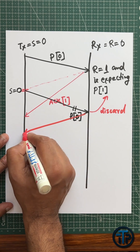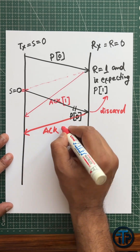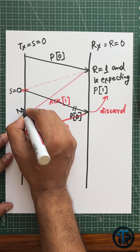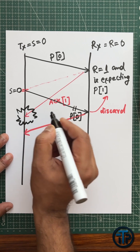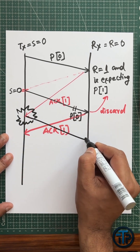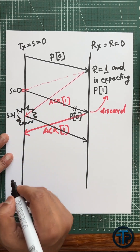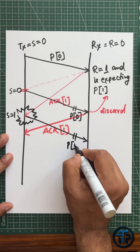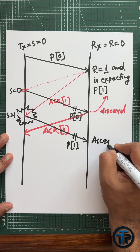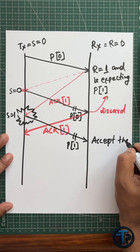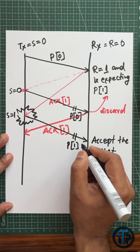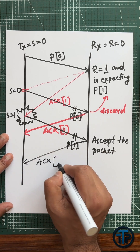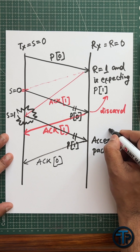Now for this case, the transmitter received the acknowledgement of the previous packet. When it received the acknowledgement of the previous packet, it will change its counter s equals to one, and then it will send packet p1. The receiver will accept packet p equals one and will send back the acknowledgement r equals zero.